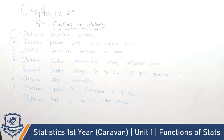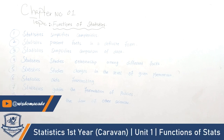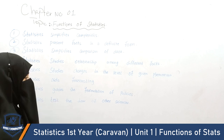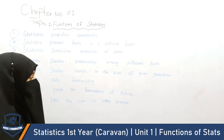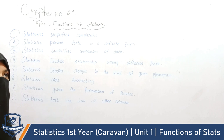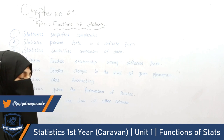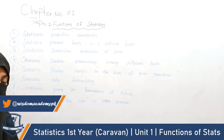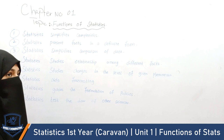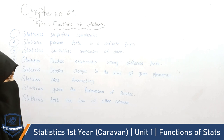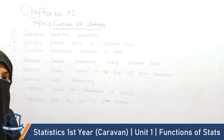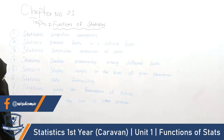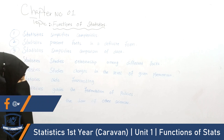Statistics also guides the formulation of policies. For example, consider a manufacturer of tires. They need to determine how many motorcycles exist in the market to decide how many tires to produce. Based on this data, they can formulate appropriate production policies.